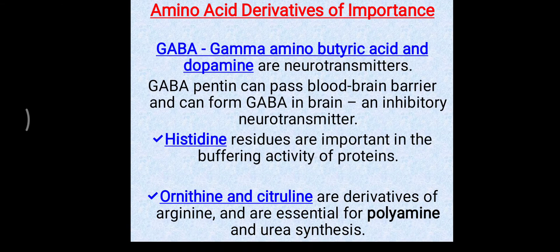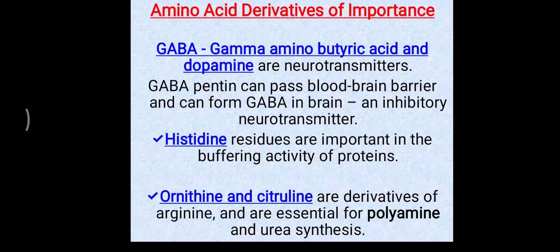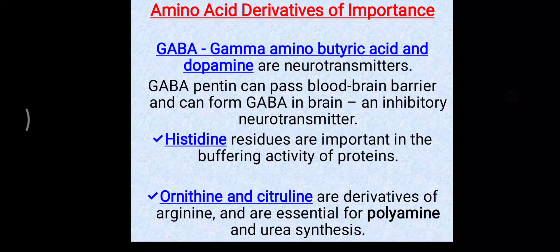So ornithine and citrulline are also called important derivatives of amino acids. These are a few examples you have to remember, as this topic can be asked as a short note, viva question, or MCQ. That's all about amino acid derivatives of importance.